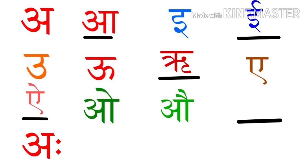अब आओ, आओ के बाद क्या आएगा? A और फिर A। बच्चो, ये है खाली स्थान भरो, ठीके? मतलब जो हमें खाली स्थान दिख रहे हैं, उन खाली स्थानों को सही उत्तर से, सही अक्षर से ध्यान से भरना है कि कौन से अक्षर के बाद, कौन से स्वर के बाद कौन सा स्वर आता है। ओके, बाई।